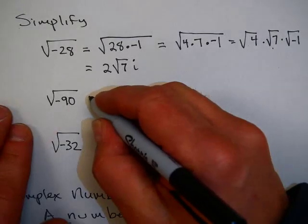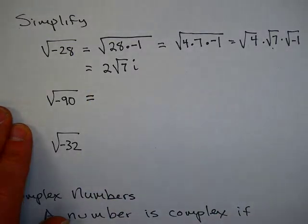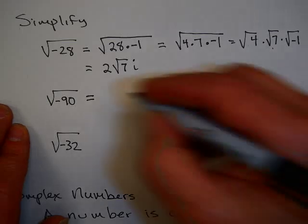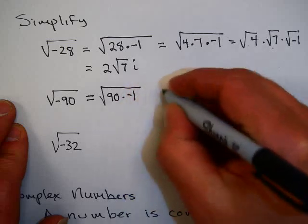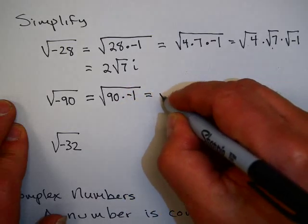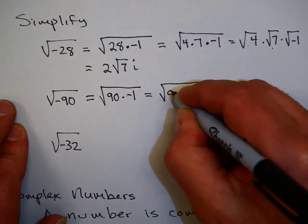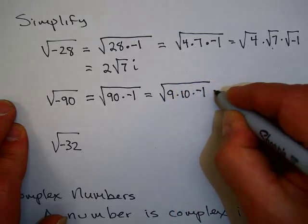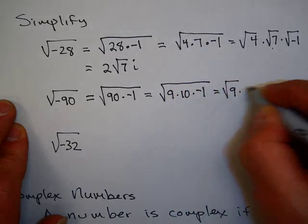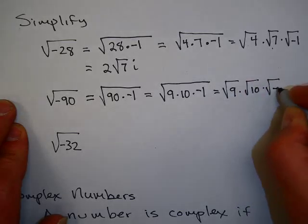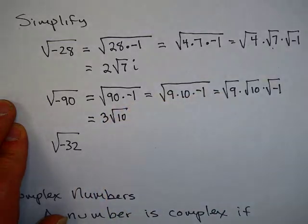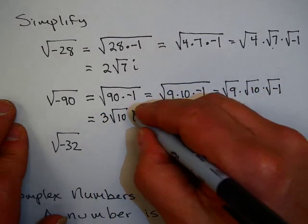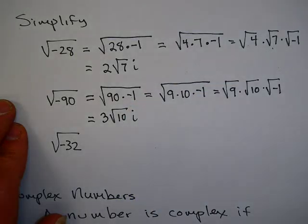Let's see if you can think about the square root of negative 90. You might want to pause the video and come back when you solve this problem. I look at the square root of negative 90 as 90 times negative 1, then as 9 times 10 times negative 1. Square root of 9 times square root of 10 times square root of negative 1. Square root of 9 is 3, square root of 10 I'm just going to leave as the square root of 10 — it can't be simplified further — and the square root of negative 1 is i.